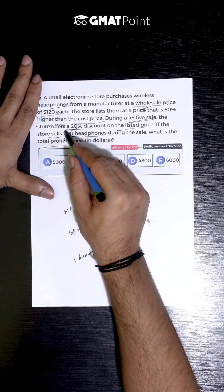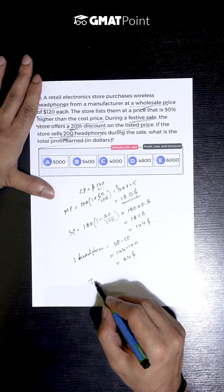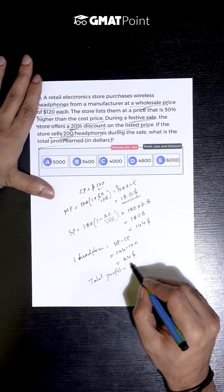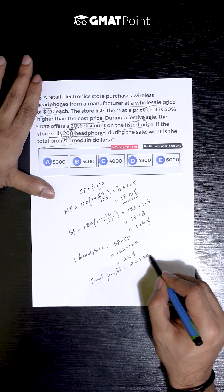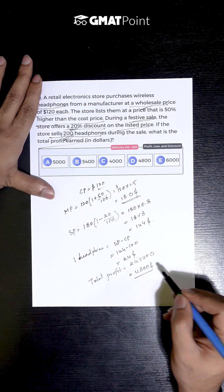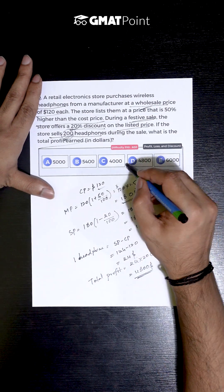We are told that during the festive sale, 200 headphones are being sold. So, the total profit can be calculated as 24 × 200 which is $4800. So, the total profit is $4800 and the correct answer is option D.